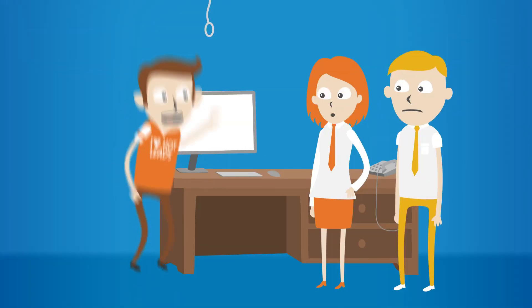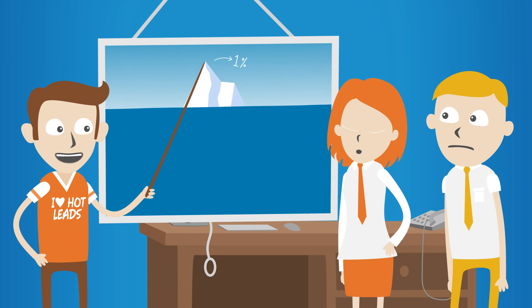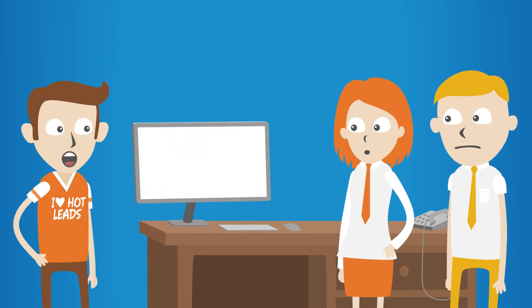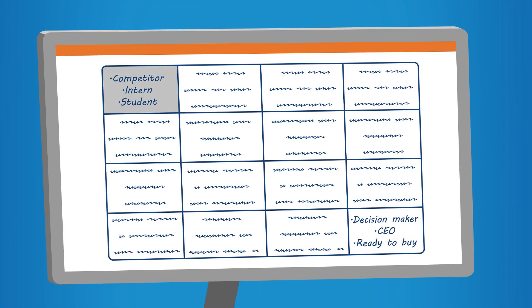May I? The thing is, your lead scoring model ranks leads using only 1% of the data that's out there. Which means many of the leads you prioritize aren't that great. And many of the leads you ignore are begging to be closed.